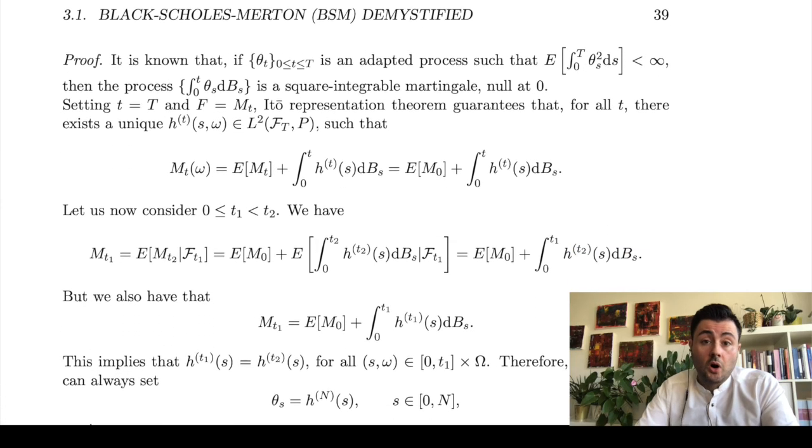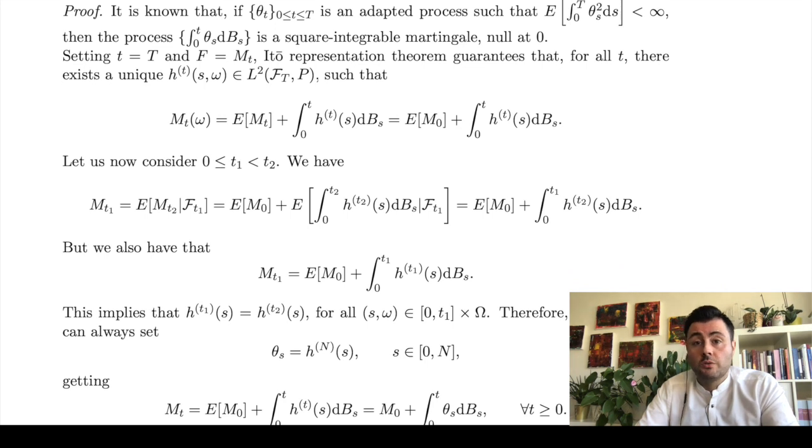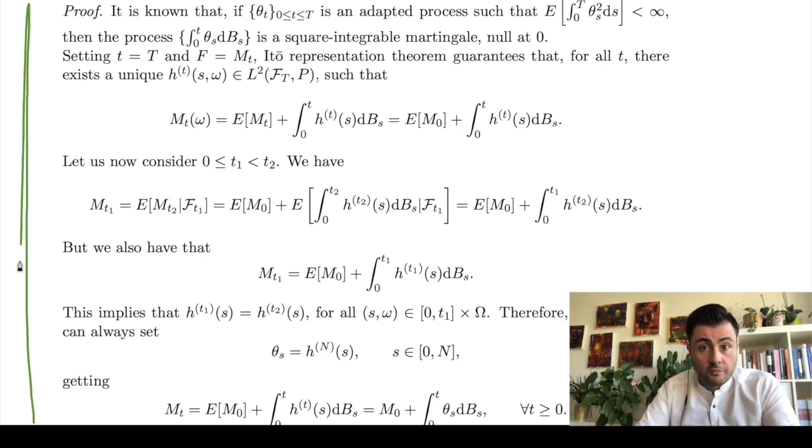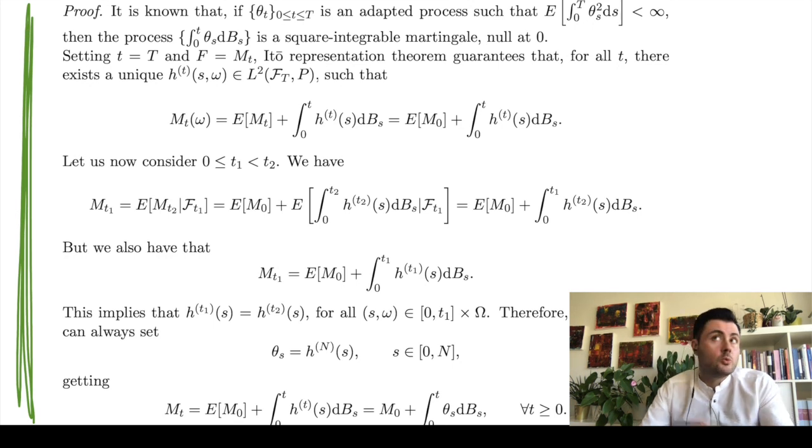The proof of the Martingale representation theorem is quite straightforward once we assume the Ito representation theorem. I leave the proof to you, you can find all the details in the lecture notes. If you have questions, if you have doubts, please remember that you can always contact me and ask for clarification.